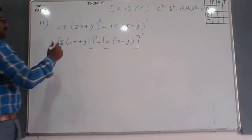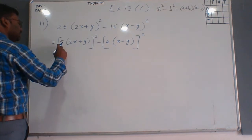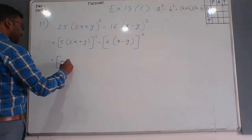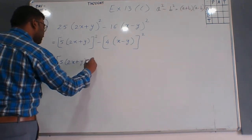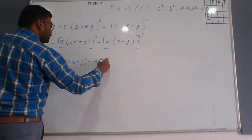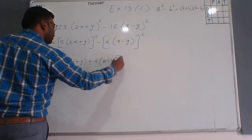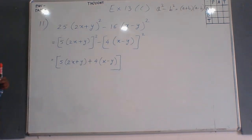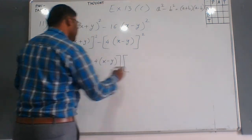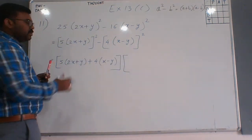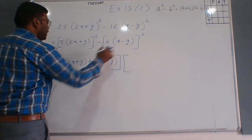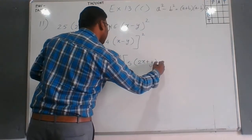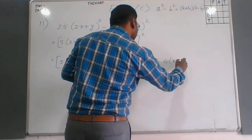As per our identity, we write (a+b): that is 5(2x+y) plus 4(x-y). Then we write (a-b): that is 5(2x+y) minus 4(x-y).